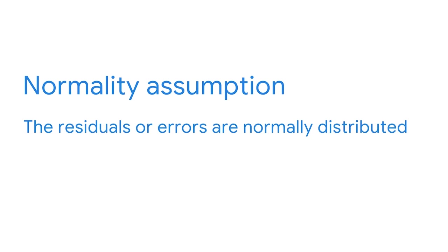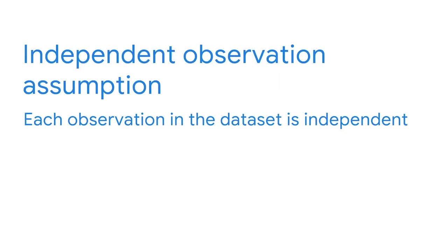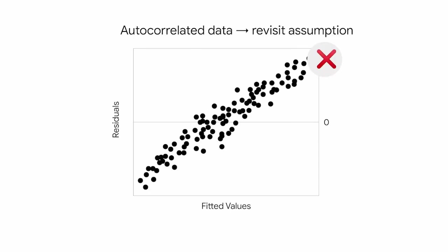Next up is the normality assumption. This assumes that the residual values or errors are normally distributed. Since this assumption is about residuals, you cannot check it until after the model is built. But once the model is built, you can create a quantile-quantile, or QQ plot, of the residuals. If the points on the plot appear to form a straight diagonal line, then you can assume normality. Next is the independent observation assumption, which states that each observation in the data set is independent. It is helpful to use contextual information about data collection to determine if this is true. If the assumption is met, we would expect a scatter plot of the fitted values versus residuals to resemble a random cloud of data points.